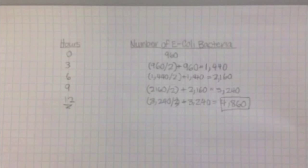After 6 hours, we divide 1440 by 2, which is 720. Then we add 720 to 1440. The result is 2160.